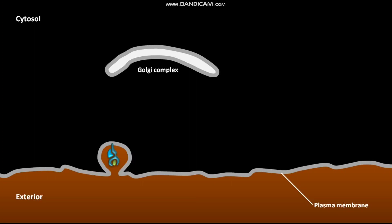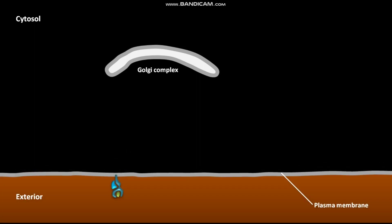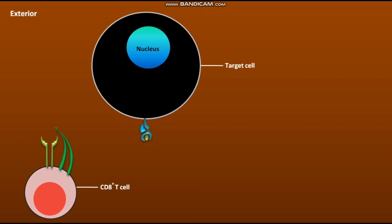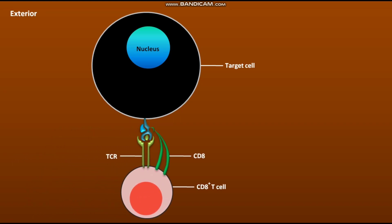As a result, the class I MHC molecule-peptide complex is delivered to the cell surface. The CD8+ T cell has TCR and CD8 on its surface. The TCR and CD8 of the CD8+ T cell bind to the exposed class I MHC molecule-peptide complex. As a result, an appropriate response is created and the target cell is killed.